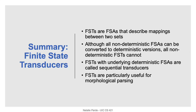In summary, finite state transducers are just finite state automata that describe mappings between two sets. One difference between the two is that although non-deterministic FSAs can be converted to deterministic versions, the same does not hold true for non-deterministic FSTs. Finite state transducers can be useful for a wide range of natural language processing tasks, including morphological parsing, as you saw in this video.